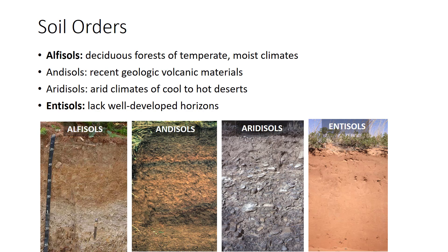As described earlier, soil scientists currently divide soils into 12 soil orders. While each of these orders carries a technical formal definition, here we will provide a simple description of each. The orders bolded can be found in Florida.